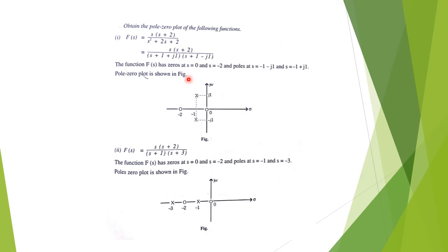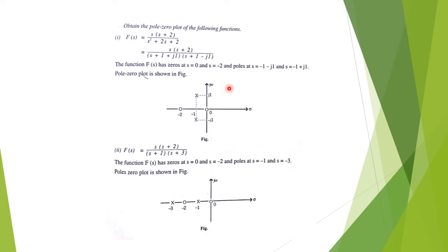Another pole exists at s = −1 + j, so a cross is placed at −1 + j. In the pole-zero plot, the real axis is called sigma and the vertical axis is the imaginary or jω axis. A suitable scale is chosen. The scale factor h is equal to 1. For a second example function, there is a zero at the origin (circle at origin), another zero at s = −2, a pole at s = −1 (cross at −1), and another pole at s = −3 (cross at −3).